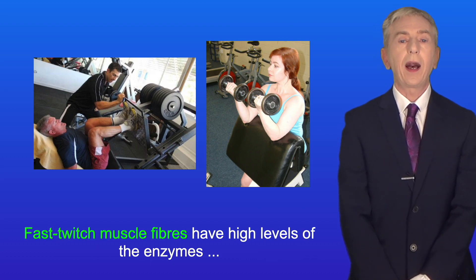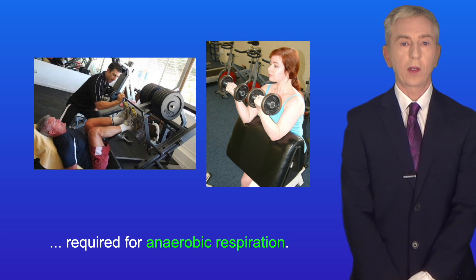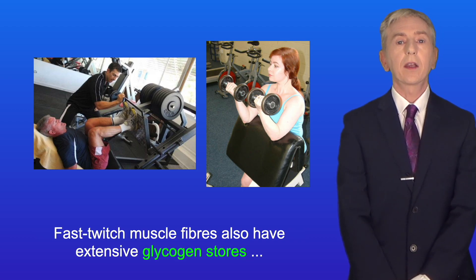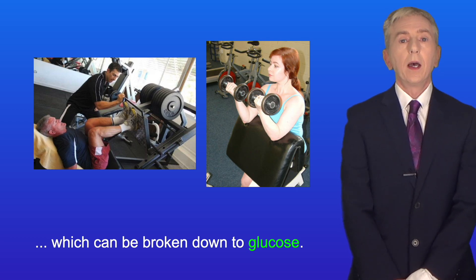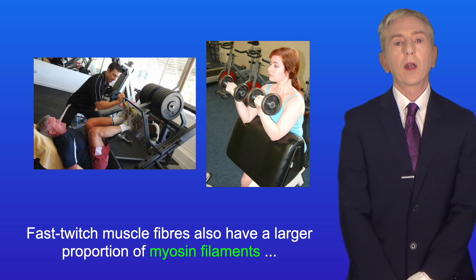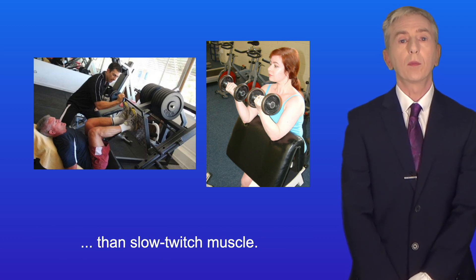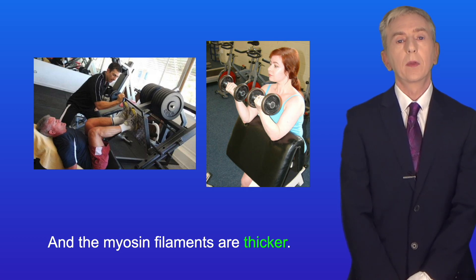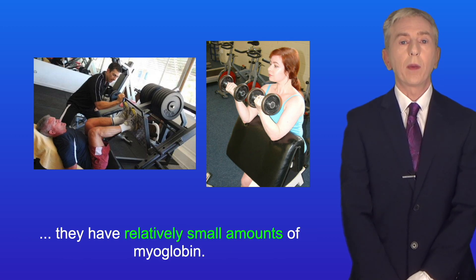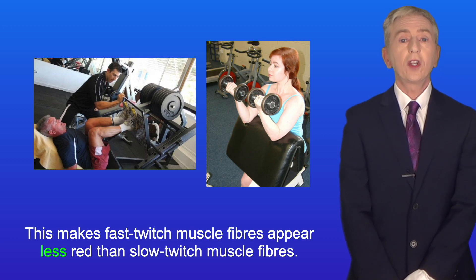Fast twitch muscle fibers have high levels of the enzymes required for anaerobic respiration, because anaerobic respiration can generate ATP rapidly. They also have extensive glycogen stores which can be broken down to glucose, and phosphocreatine stores can be used to rapidly generate ATP from ADP. Fast twitch muscle fibers also have a larger proportion of myosin filaments than slow twitch muscle, and the myosin filaments are thicker. Finally, because fast twitch muscle fibers are adapted for anaerobic respiration, they have relatively small amounts of myoglobin, making them appear less red than slow twitch muscle fibers.